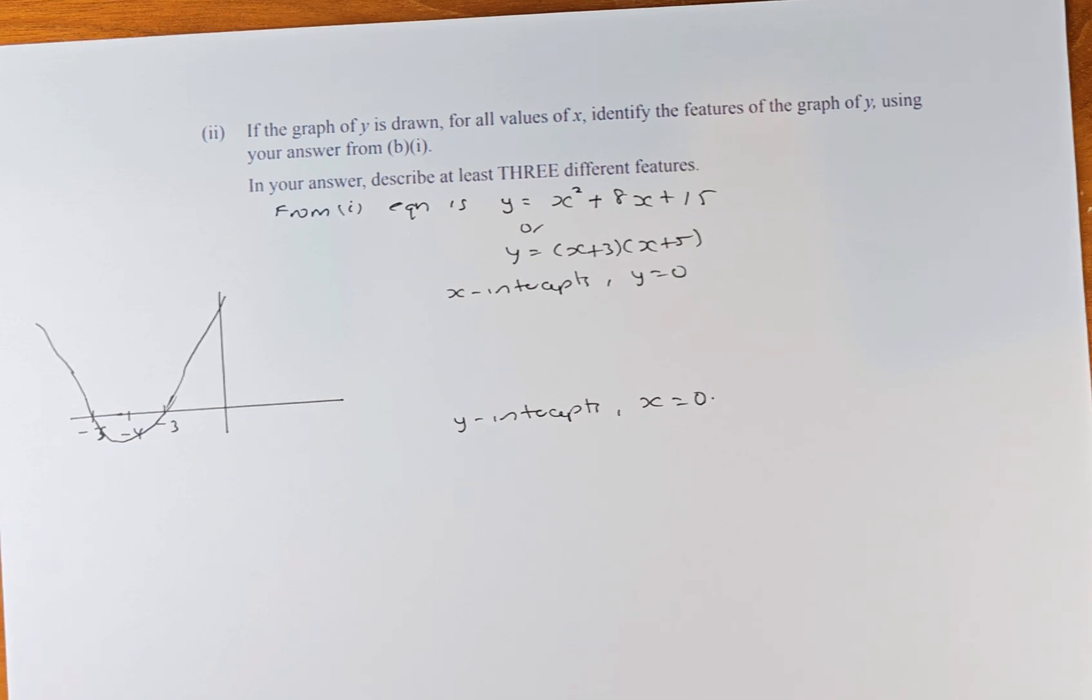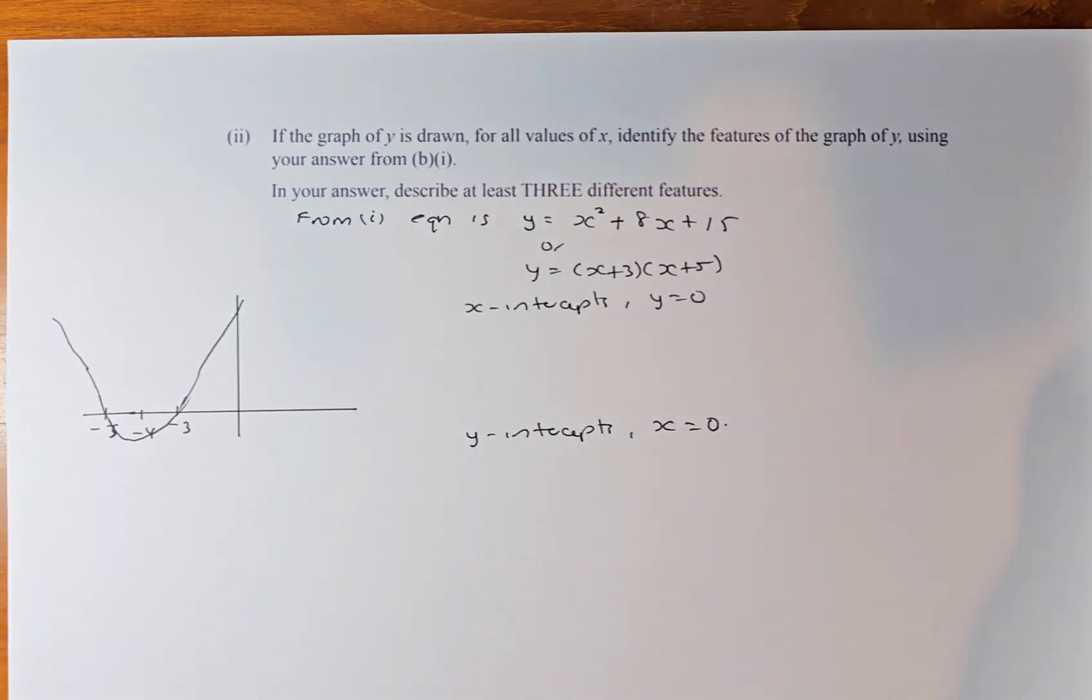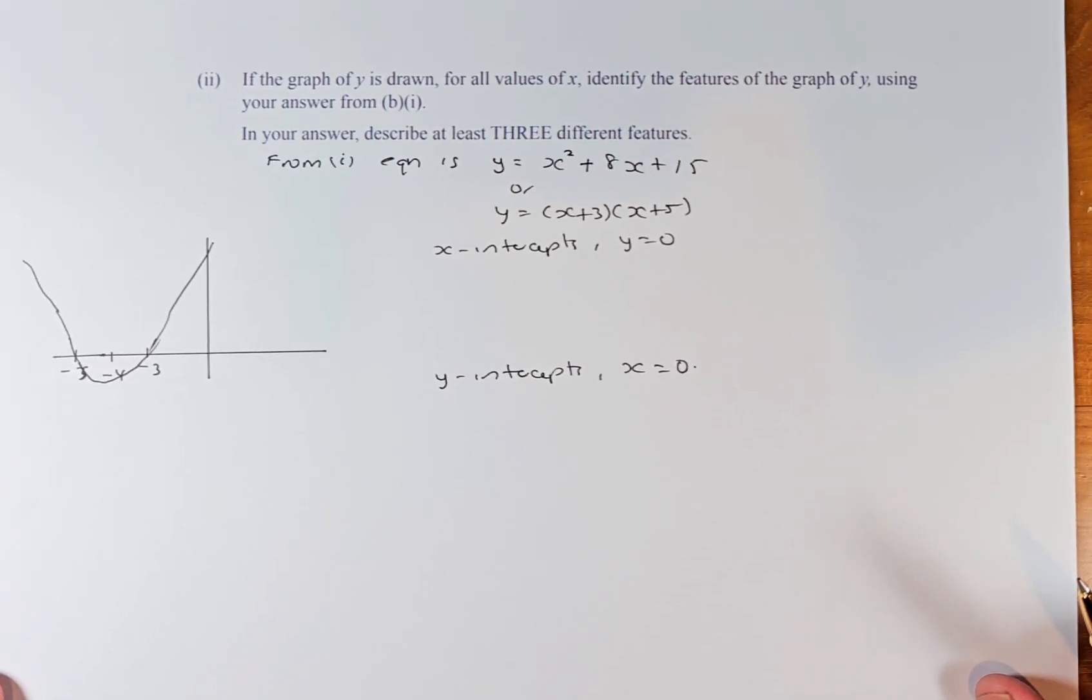So the question sounds like this: If the graph of Y is drawn for all values of X, identify the features of the graph of Y using your answer in part 1.